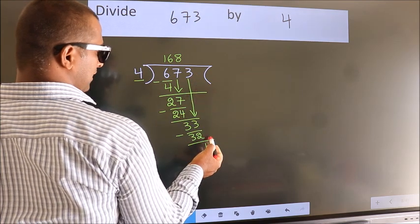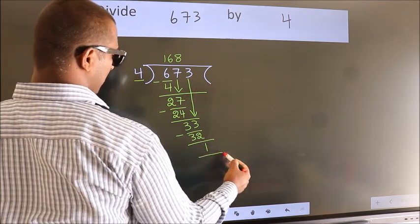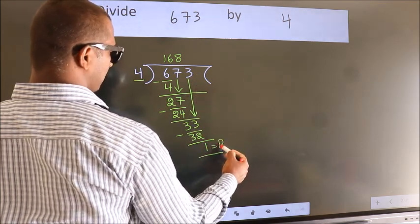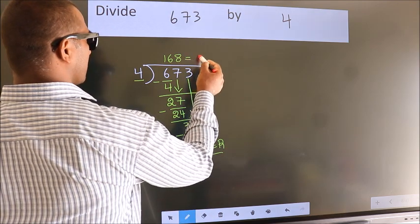No more numbers to bring down. So we stop here. This is our remainder. This is our quotient.